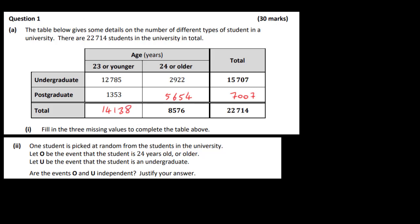It's just subtractions or additions. If you want to add these two, you'll get this one. You can check as well — add these two, it should give you this one. Add these two, it should give you this one. Add these two, it should give you this one here.